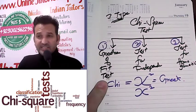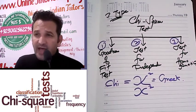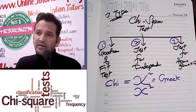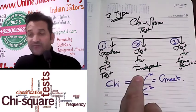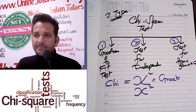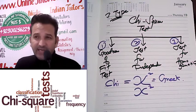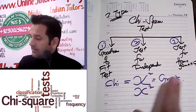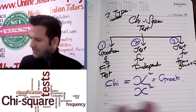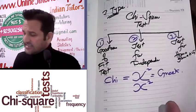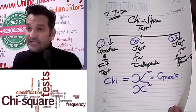The goodness of fit test is also known as the univariate or one-dimensional test. The test for independence is also known as the multidimensional or bivariate test. We will now explain each and every test in a little detail.